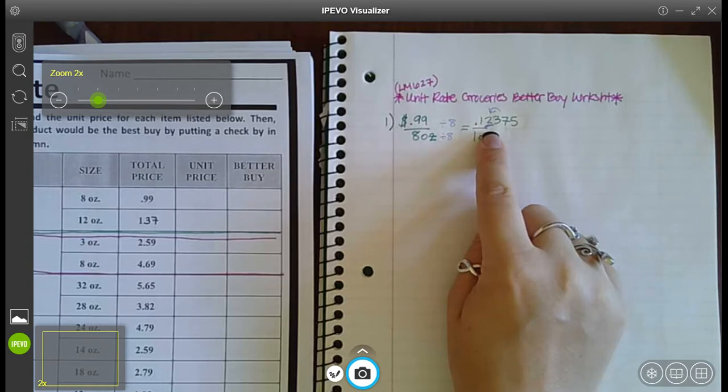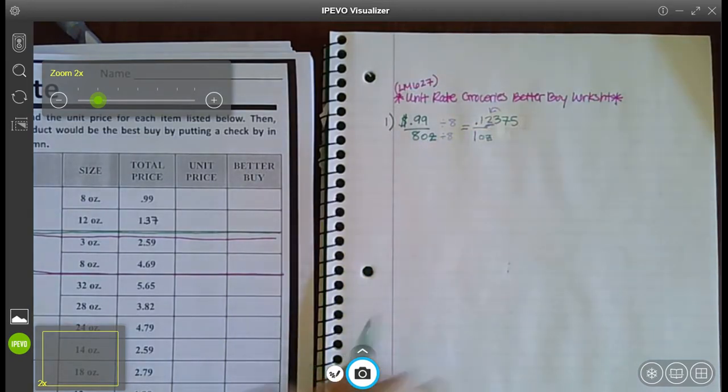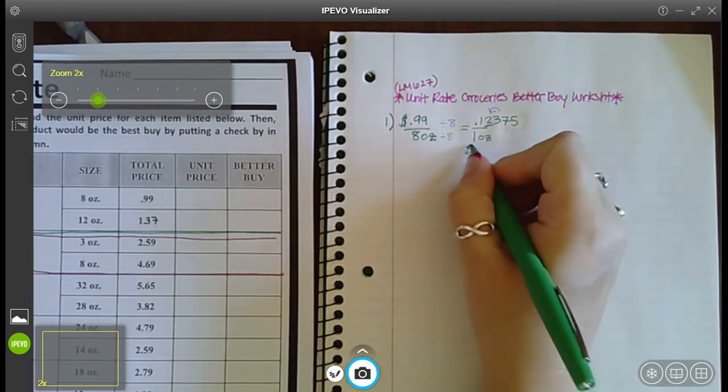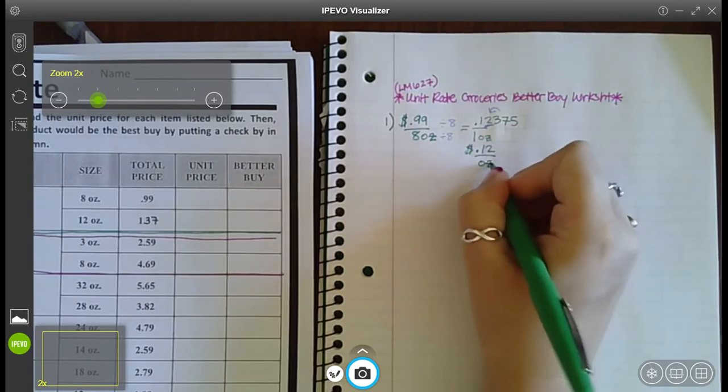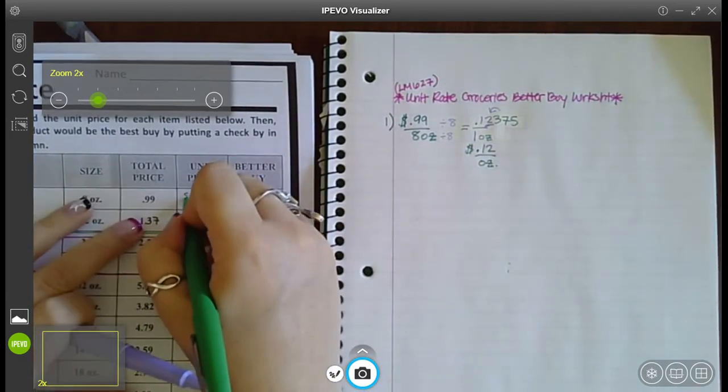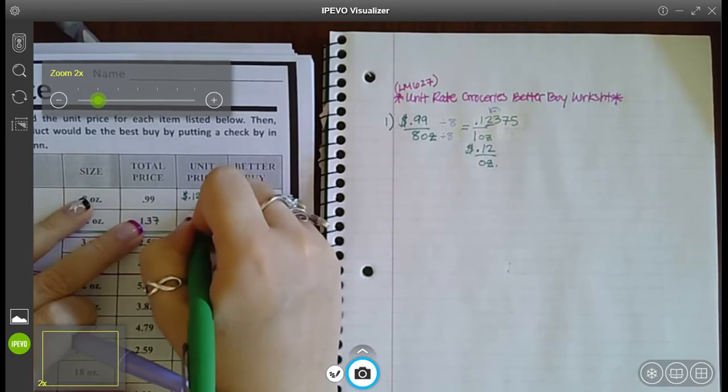There's no such thing as round down. It's either stay what it was or go up. Since this is a three, it tells us two to stay a two. So this unit price is 12 cents per ounce. Okay, so this one was 12 cents per ounce.